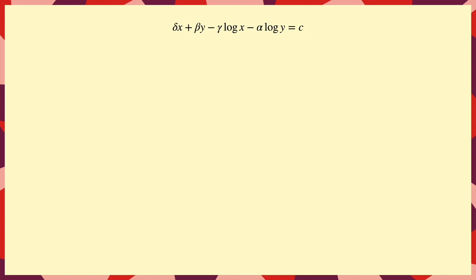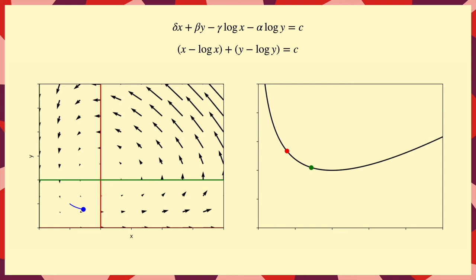And finally, for simplicity, let's say that the constants are all equal. Then this simplifies to x minus log x plus y minus log y equals c.